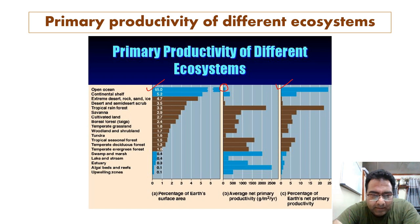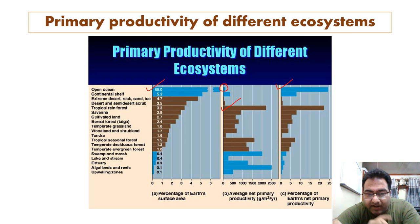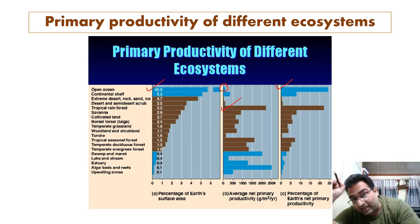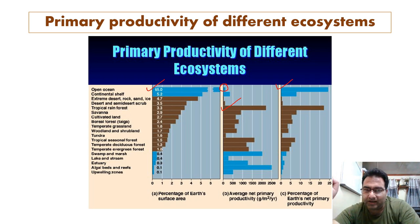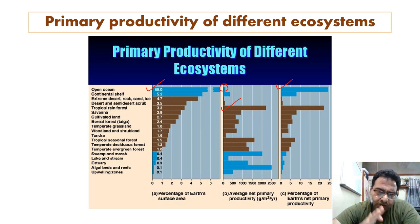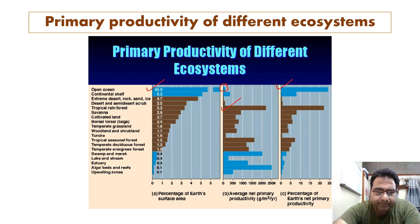In the terrestrial environment, tropical rainforests have the highest average net primary productivity. In terms of percentage contribution, the oceans contribute overall due to their vast surface area, while on land it is the tropical rainforests that dominate.